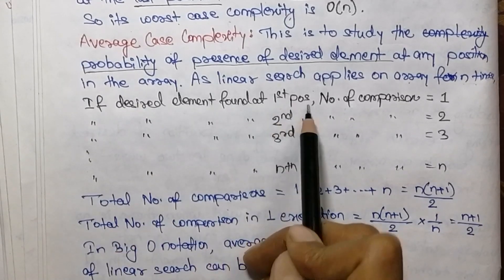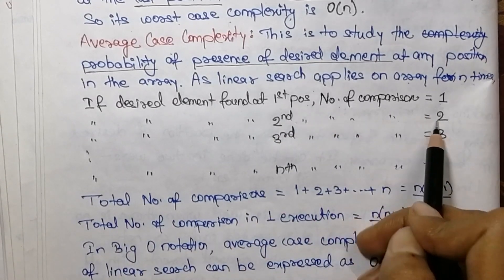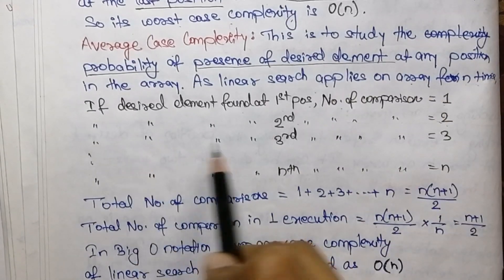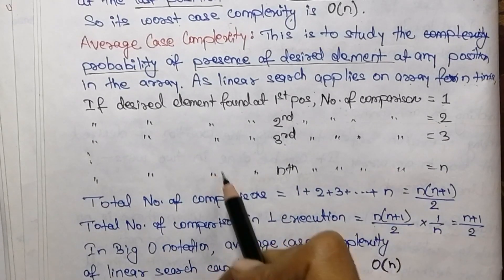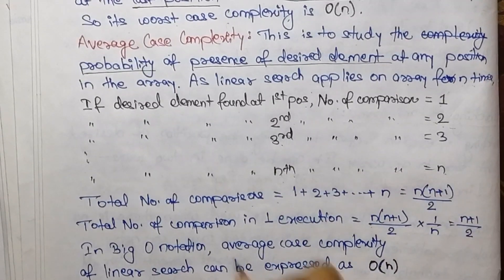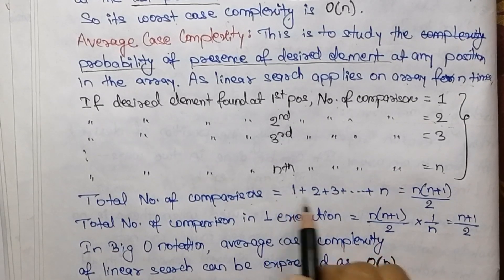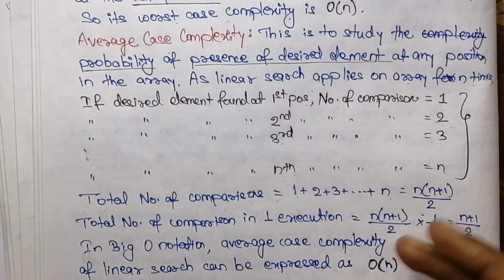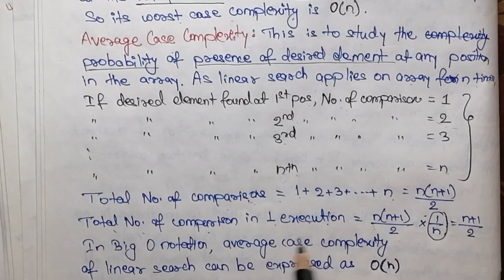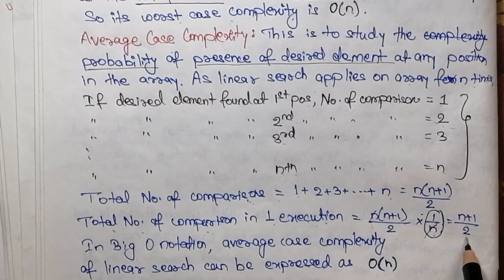The average case complexity for linear search in an array containing n elements: if the desired element is found at the first position, comparisons = 1; at the second position, comparisons = 2; at the third position, comparisons = 3; and so on up to the n-th position, comparisons = n. The total number of comparisons is the sum 1 + 2 + ... + n, which equals n(n+1)/2. This is the total number of comparisons in n executions.